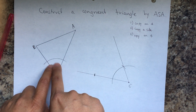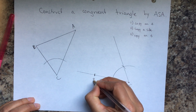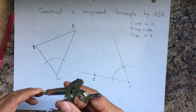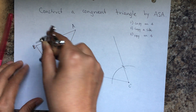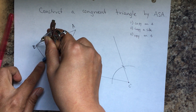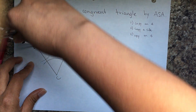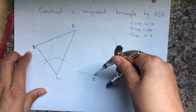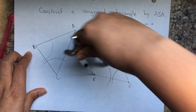Now I need the other angle. To copy the angle, just like I did before, I'm going to copy angle B and label that B prime. To copy an angle, I keep getting the same question: how far do I open the compass? It doesn't matter, as long as you keep this measurement and transfer the same measurement over.